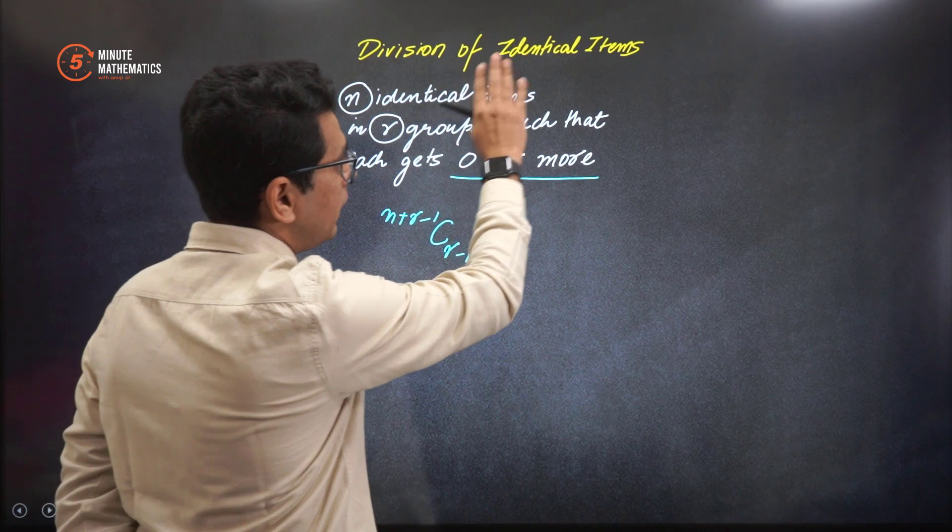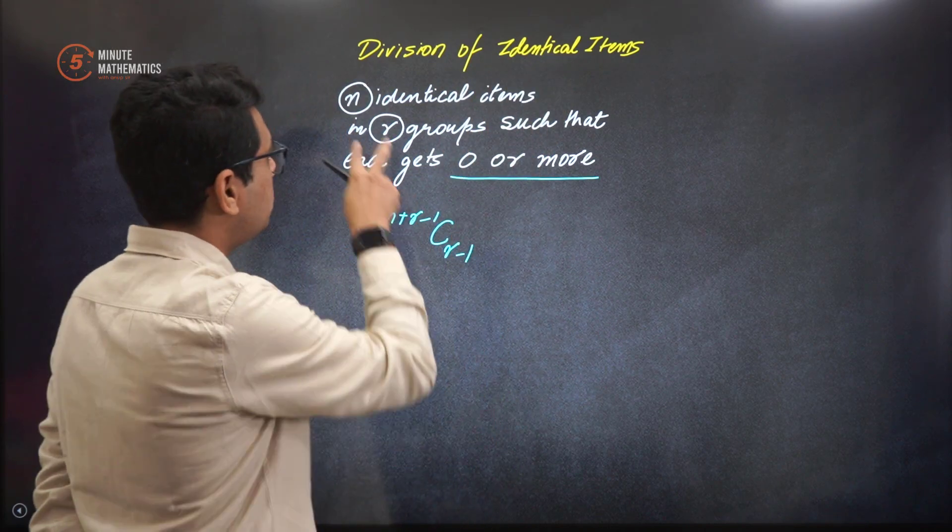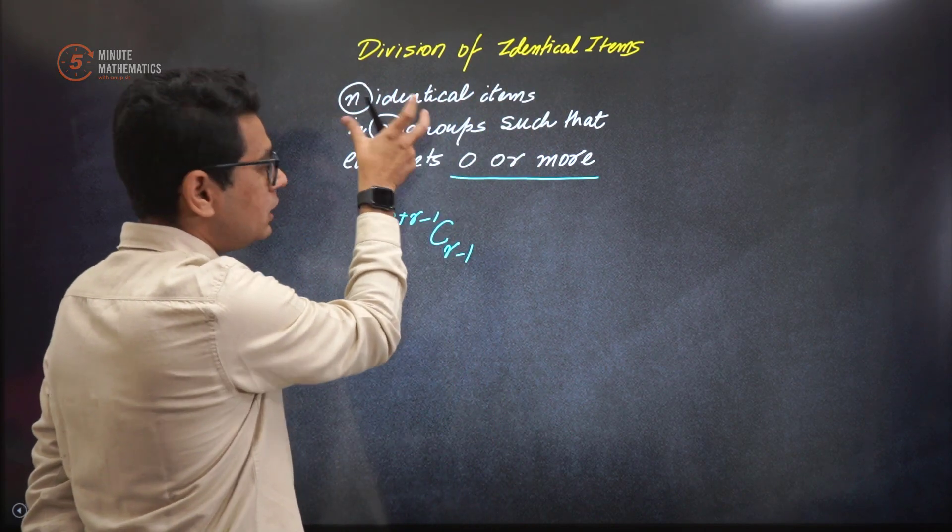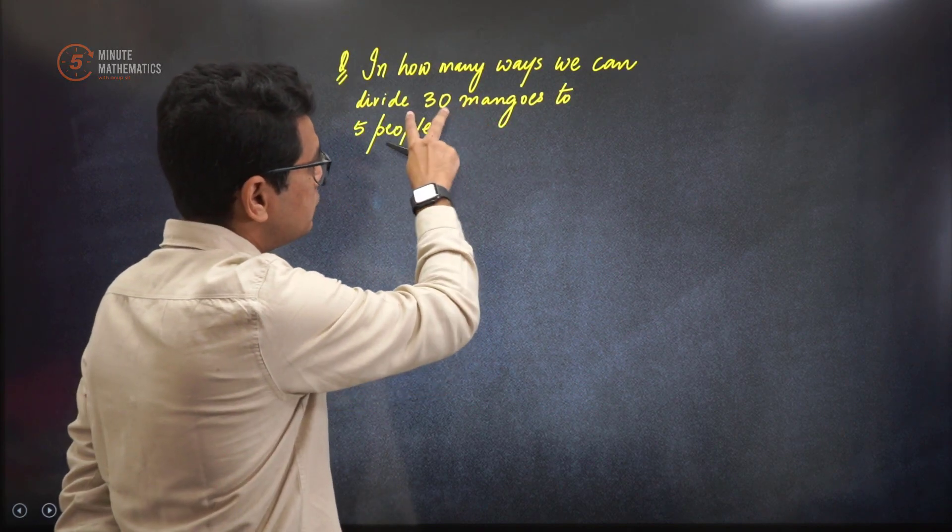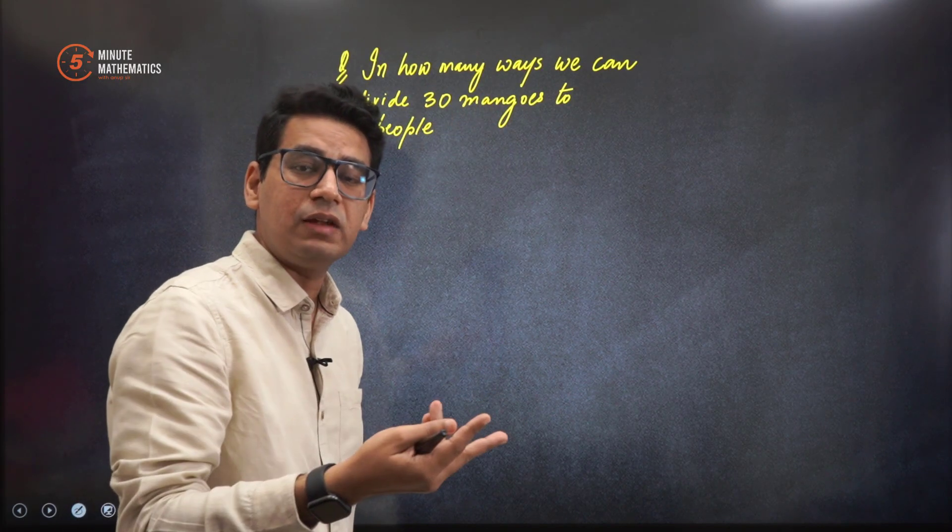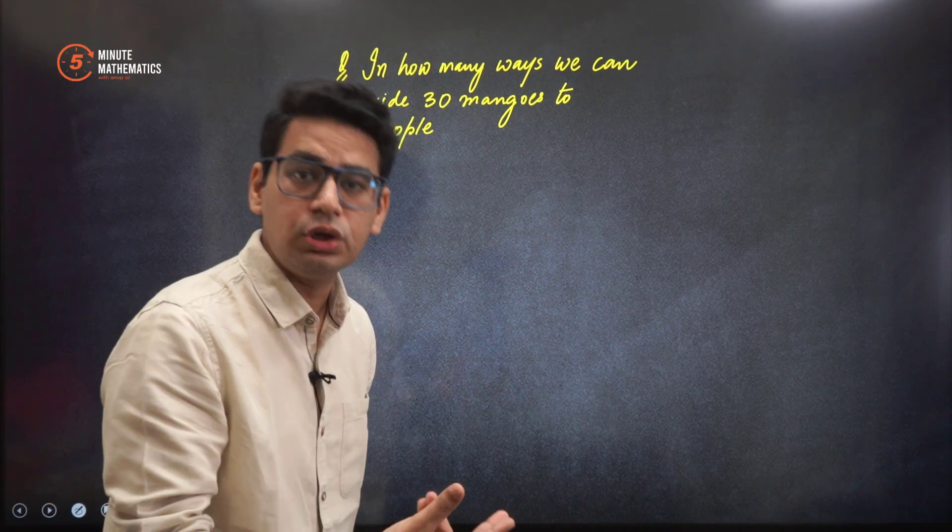So let's look at the formula. This concept is called division of identical items. What do you mean? N identical items. Here N, as compared to our question, let's go back to the question.